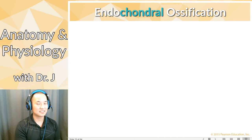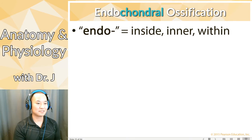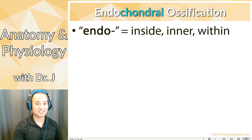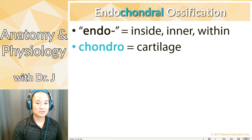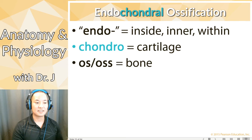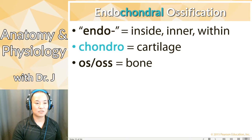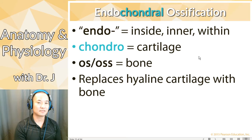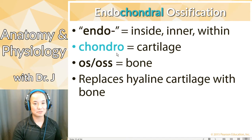Now let's talk about endochondral ossification. Chondral means cartilage, and endo means inside or within — like endoderm, endocrine. So endo = inside, chondral = cartilage, os = bone, and -ification = the process of becoming something. Basically, endochondral ossification means inside cartilage you're forming bone — you're replacing hyaline cartilage with bone. That's the fancy term for just that, but if you know those root words you can figure it out.